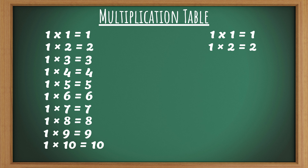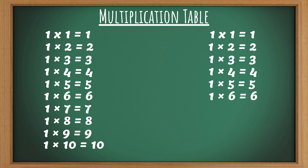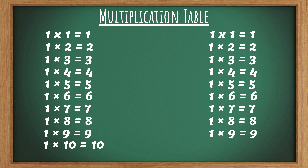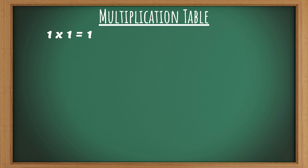1 1s are 1, 1 2s are 2, 1 3s are 3, 1 4s are 4, 1 5s are 5, 1 6s are 6, 1 7s are 7, 1 8s are 8, 1 9s are 9, 1 10s are 10.